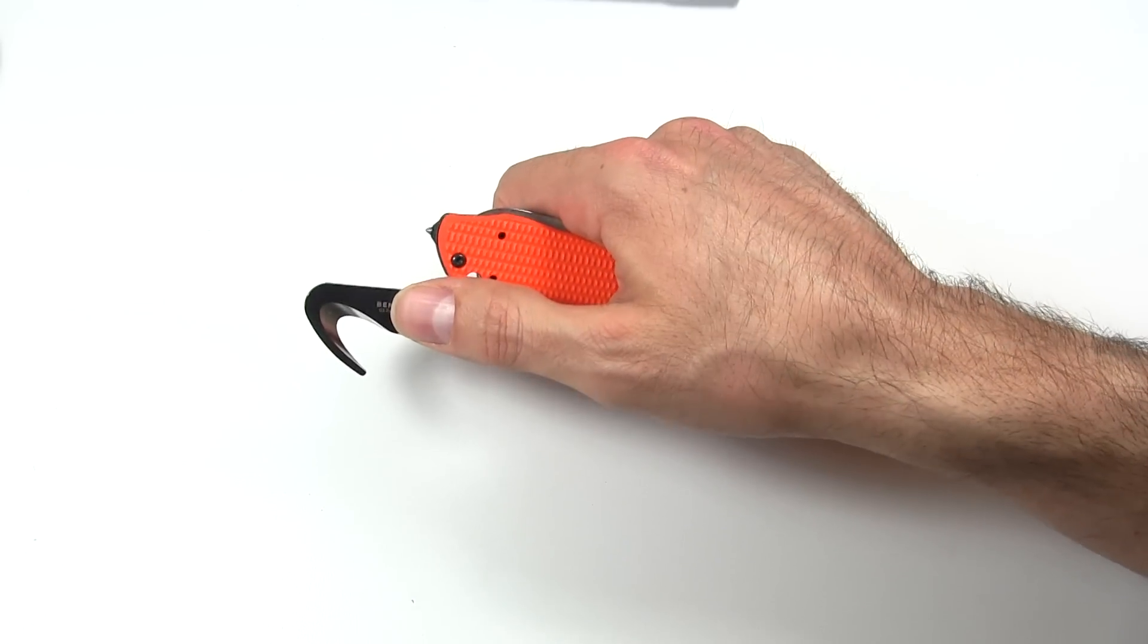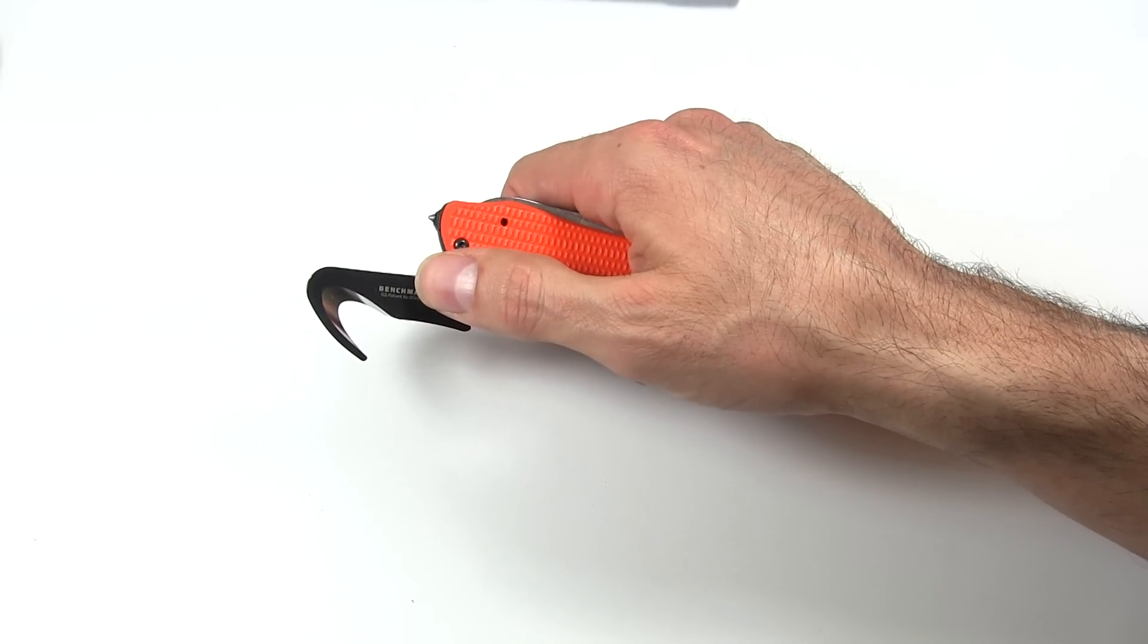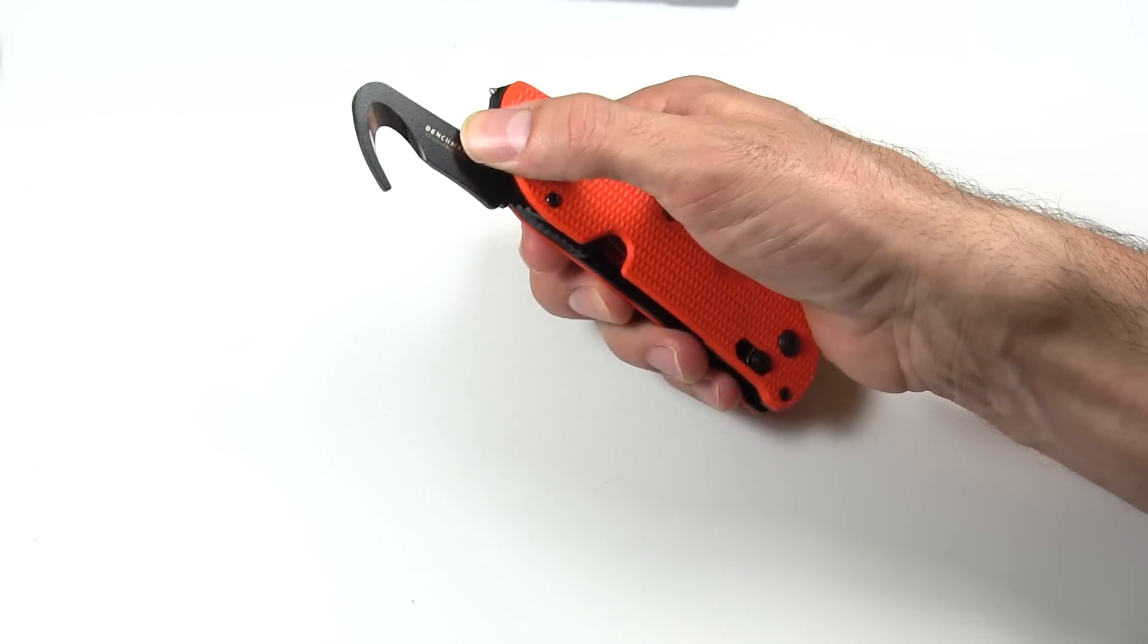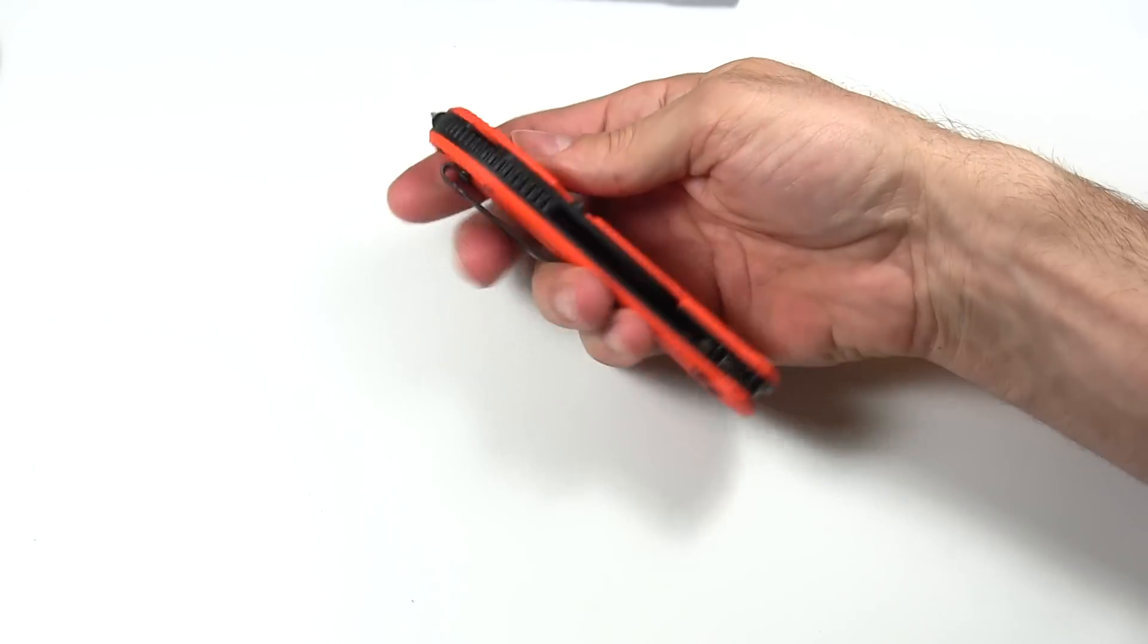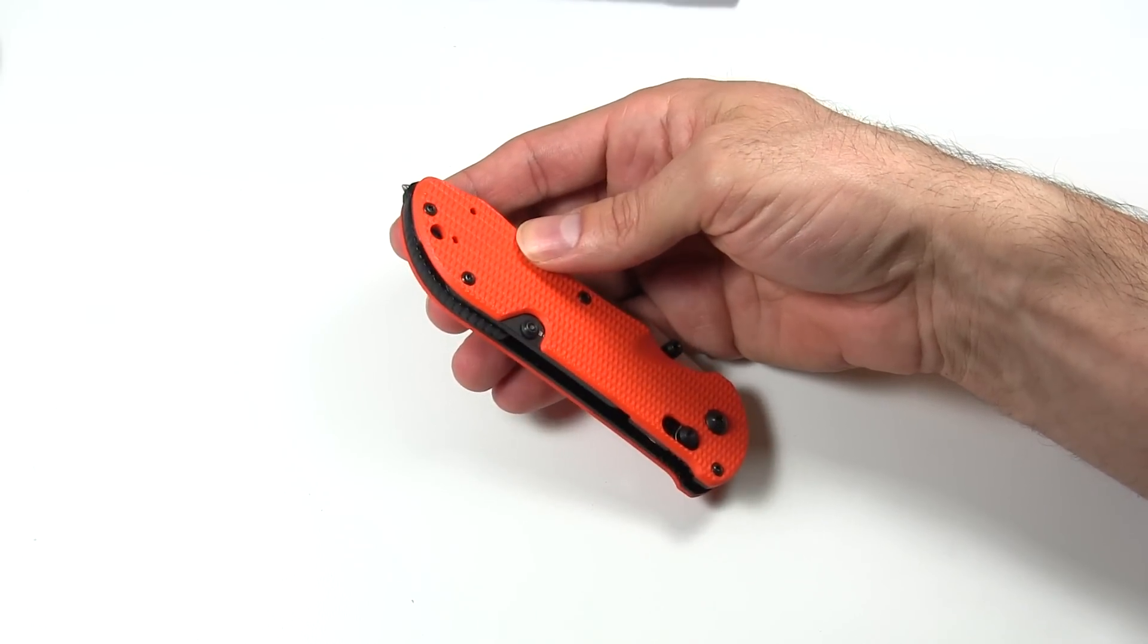This is a 5 hook by Benchmade's numbering system. They come in a couple different sizes, some bigger sizes, I think a 7. But this is the 5, kind of the medium size. And it just tucks right into the handle of this knife. Tucks right away. You'd have no idea it was there. It's just a cool little design.